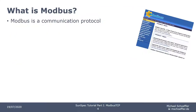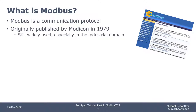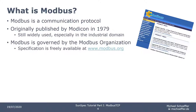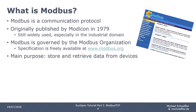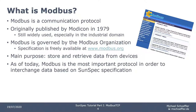Let's go on with Modbus. What is Modbus? Modbus is a communication protocol that has been around for a while. It was published by a company called Modicon in 1979. Despite its age, it's still widely used, especially in the industrial domain. Modbus is governed by the Modbus organization — on their website modbus.org, you can download the specification for free. Simply spoken, its main purpose is just storing and retrieving data from devices. Today, it's the most important protocol when it comes to exchanging data based on the SunSpec specification.